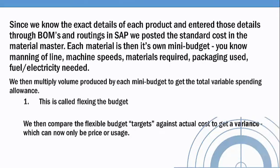...material required, material cost, any packaging, and any utilities. If we multiply those little standard cost estimates by the volume, we get what we call a flexible budget. It will give us a total spending allowance based on volume.